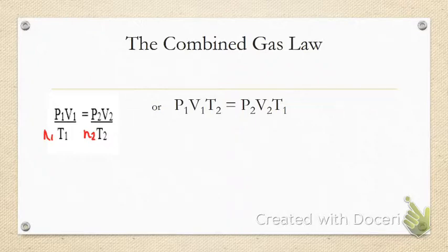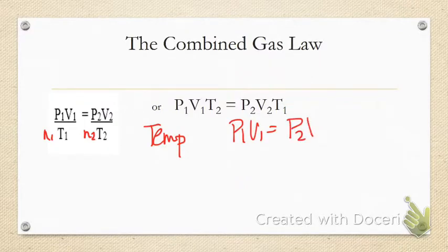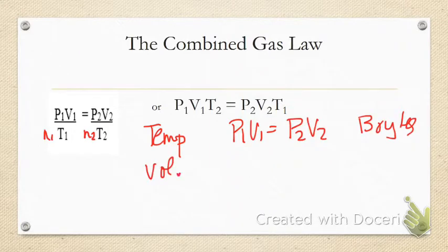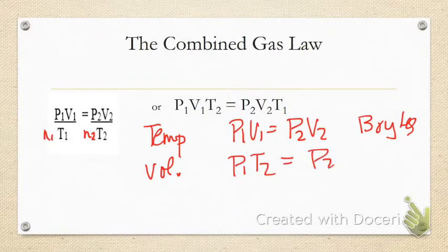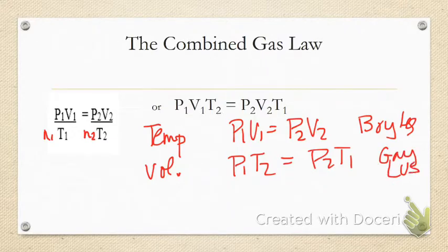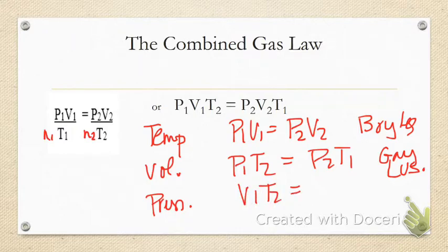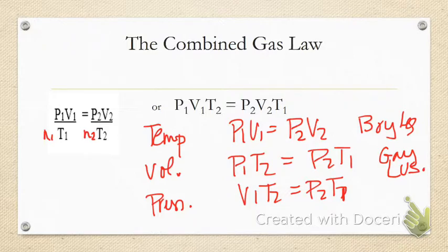If temperature is constant, then I'm left with P1V1 which is Boyle's. If volume is constant, I take volume out and have P1T2 equals P2T1, that's Gay-Lussac. If I hold pressure constant, I'm left with V1T2 and V2T1, that's Charles.